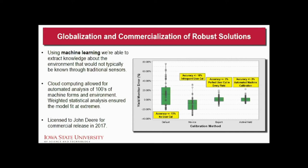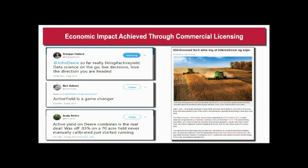This technology has opened up yield data accuracy in parts of the world that simply don't have the infrastructure to do this — folks in Brazil, Ukraine, and parts of Europe now have better data. It has also created some unique opportunities to get feedback. One of the things about licensing technology is pretty soon people start tweeting about stuff that was a PhD project. Seeing 'John Deere liking active yield — data science on the go' — that's impact. That's a PhD project now creating better data for agriculture. That's the value of commercialization when we really scale this up and create huge opportunities. And the end user may not know we were involved — that's okay, we have other ways to recognize our innovations through award metrics at the university.